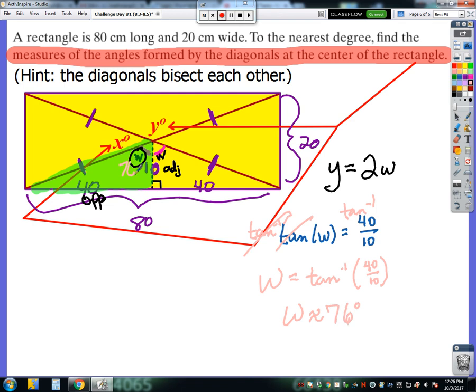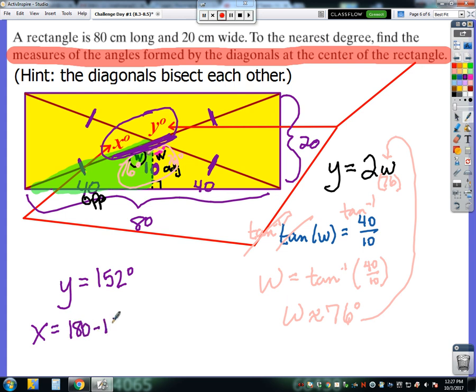So that means this angle here is 76 degrees, but so is the angle right next to it, which means all together, plugging in 76 into w here, y, the angle above it, its vertical angle, is 2 times 76. So that makes y equal to 152 degrees. Now the relationship between x and y is that they are supplementary because they are on a straight line. So to find x, we can find the supplement of the 152 degree angle, which would be 28 degrees. And there's our final answers for x and y.